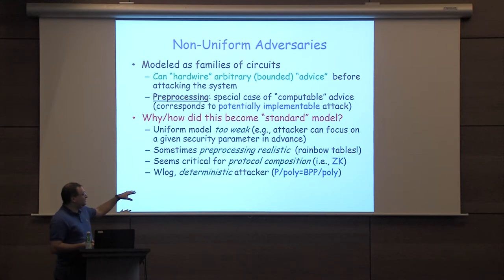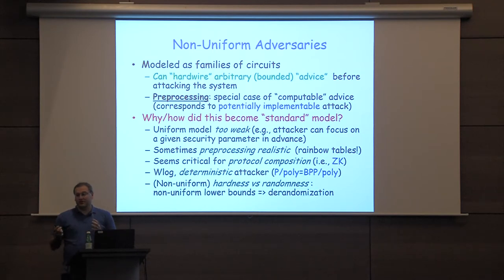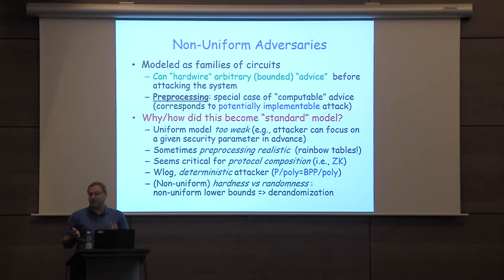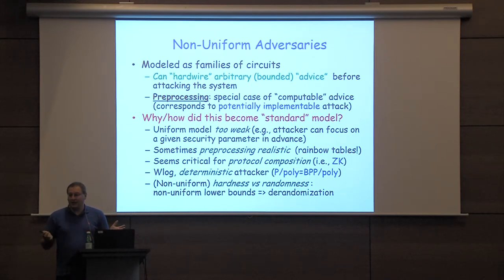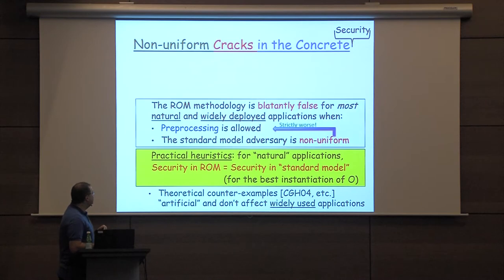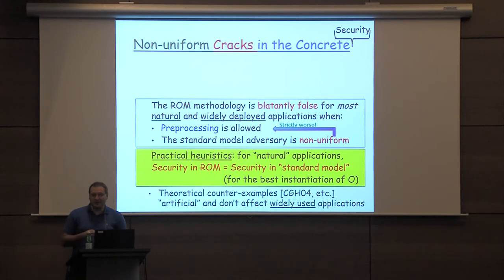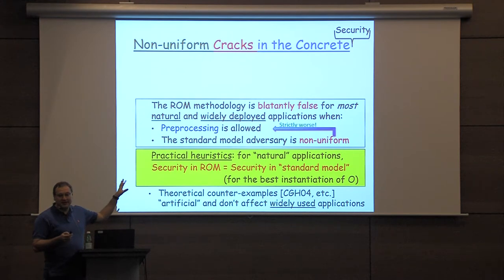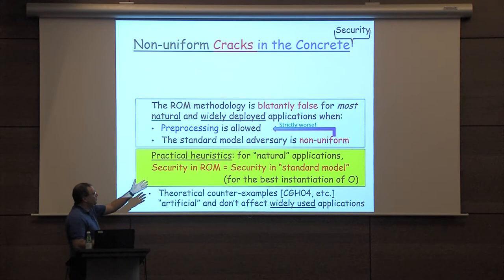There are other reasons as well. Without losing generality, we can assume non-uniform attackers are deterministic by hardwiring the best randomness. And there are very nice complexity-theory hardness-versus-randomness trade-offs that crucially work only in the non-uniform model. So there are a lot of reasons — both practical and theoretical — why non-uniform attackers is a meaningful model of computation, even though it allows these potentially unrealistic attackers. So let's revisit our random oracle heuristic. Based on the examples I gave, we see that it's not just false — it's blatantly false for every application I know about.